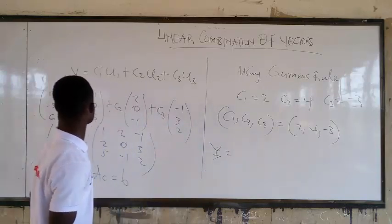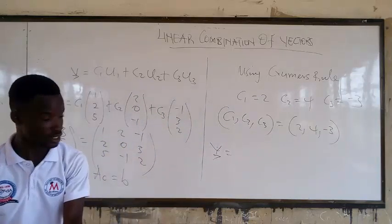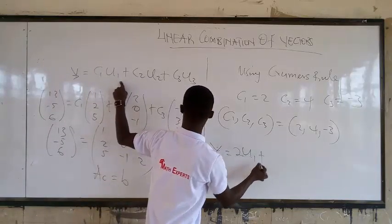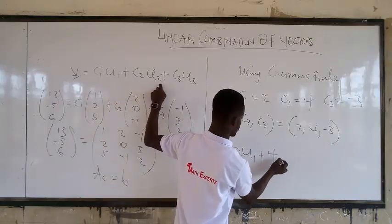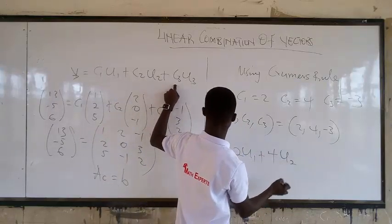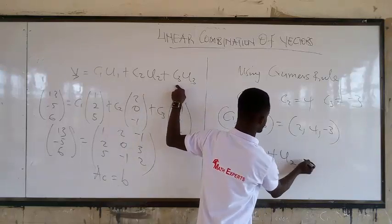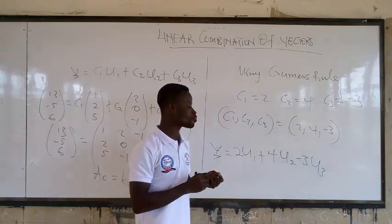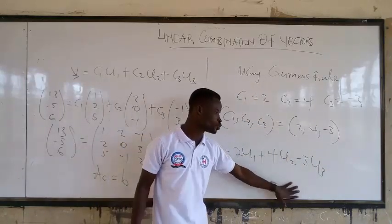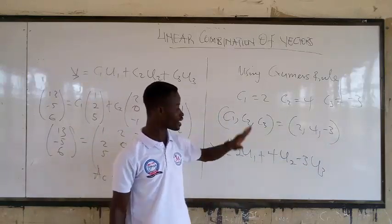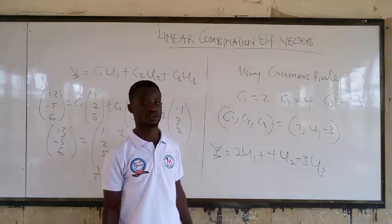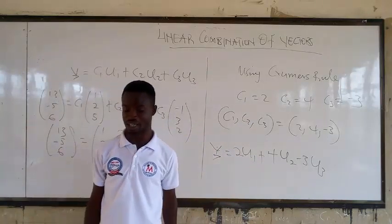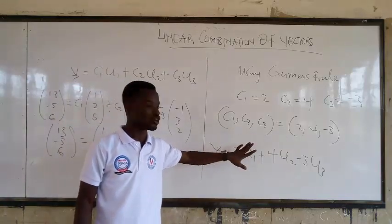And therefore, if I say C1, C2, C3 is equal to 2, 4, negative 3. Therefore, you are going to get it in the form, please watch. C1 is equal to 2, U1, plus C2 is equal to 4, U2, plus here's going to be negative 3, U3. Please don't bring back the U1, the U2, and the U3. That is all. You are going to get the scalar multiple that we are looking for. And when you write it in this form, it means that you are writing it in the linear combination form.